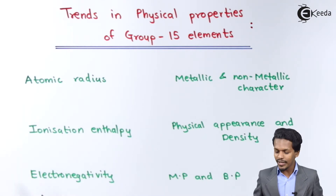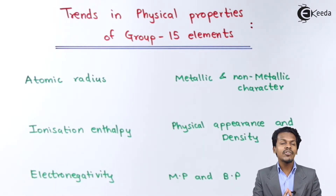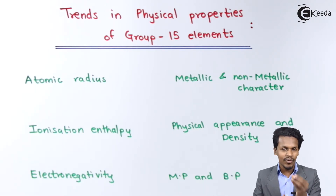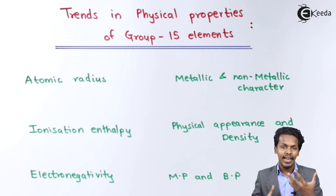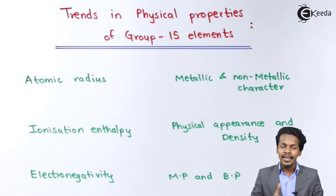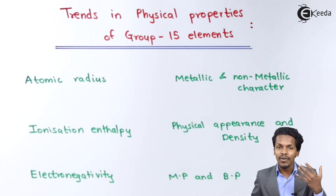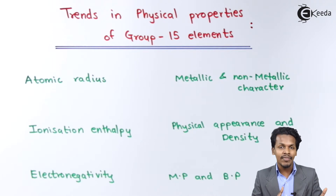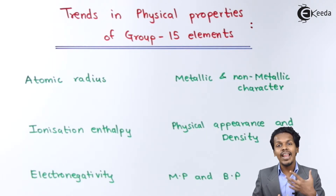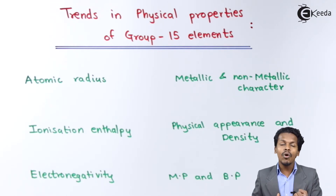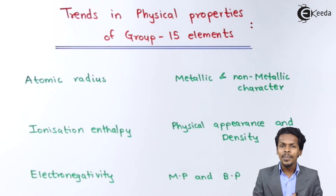Now let me talk about electronegativity. Nitrogen is the smallest element in group 15, while bismuth has a larger size. The shielding effect of bismuth is much larger than that of nitrogen, reducing bismuth's ability to attract electrons. As a result, nitrogen has a higher electron-accepting capacity, making it more electronegative than bismuth.